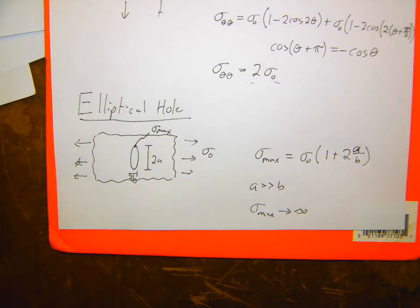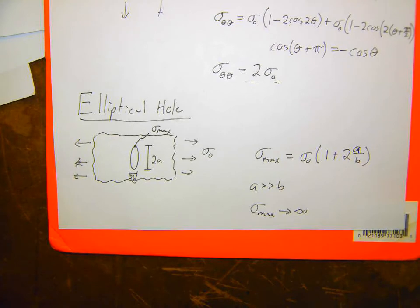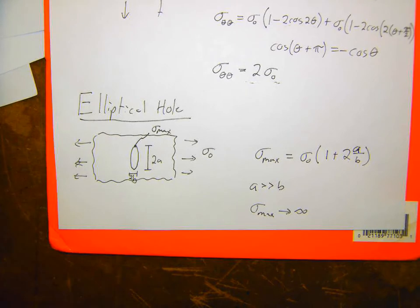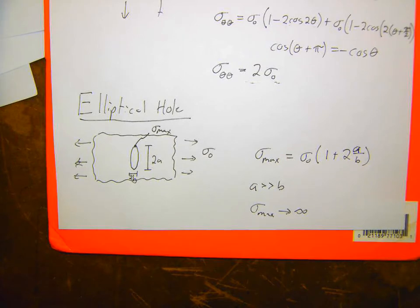Digital image correlation (DIC) is a digital technique that tracks a speckle pattern on a sample. This example shows a hole in a plate with a semi-random speckle pattern. It tracks the relative motion of small subsets of the speckle pattern across the body to figure out the strain field. DIC is scale independent and rate independent — it doesn't matter what size your sample is or how fast it's moving; all that matters is capturing a series of images to track how those pixels are moving.